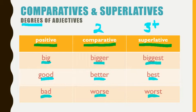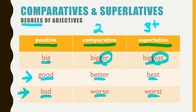One thing to note is that most of them are just regular. They change regularly with a simple rule of adding ER or EST at the end, but there are a few like good and bad that are considered irregular because the entire word changes to something else — like bad becomes worse, not badder and baddest.